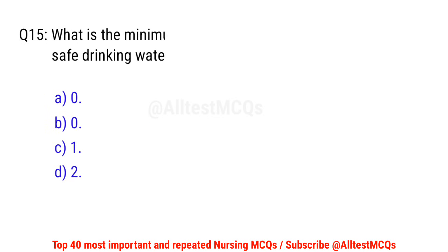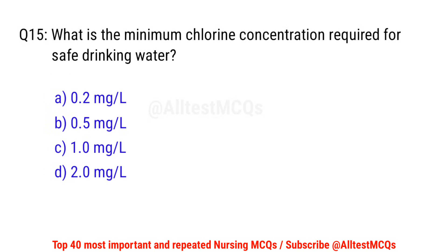Question No. 15: What is the minimum chlorine concentration required for safe drinking water? The right option is B: 0.5 mg per liter.